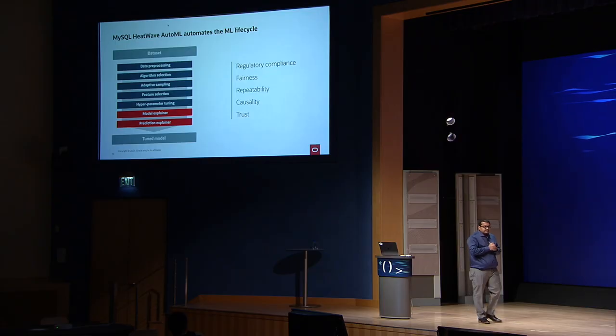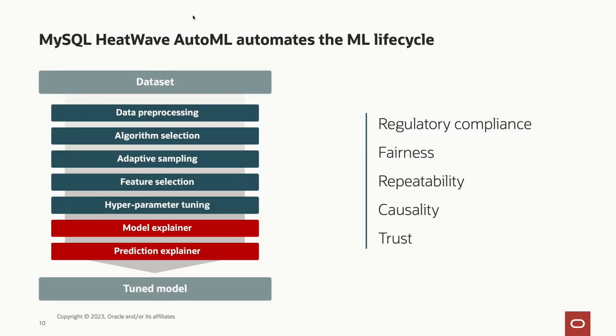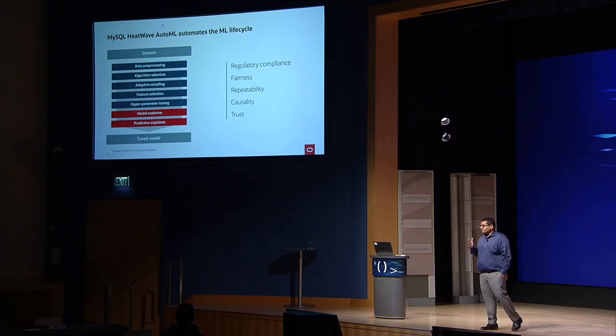Let's look deeper into what HeatWave AutoML actually does. You give it a dataset or a table. The first stage is data pre-processing: we look at all the columns in your data and figure out how to deal with each column. For example, we look at null values and figure out how to fill them — in machine learning terms, this is called imputation. If you have a varchar column containing categories like male or female and then there is a null value, HeatWave AutoML will automatically figure out how to best fill that null value.